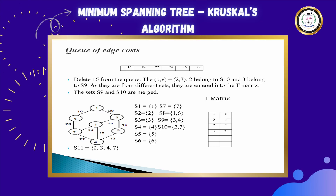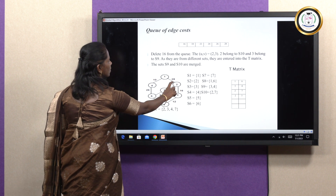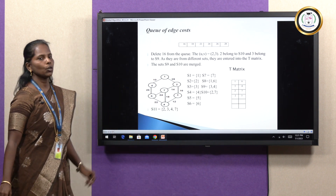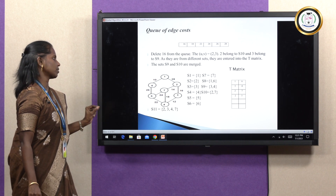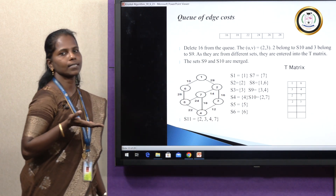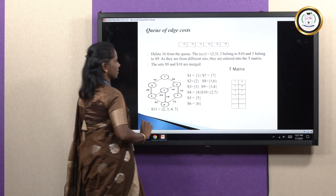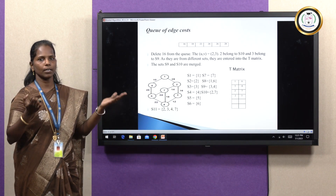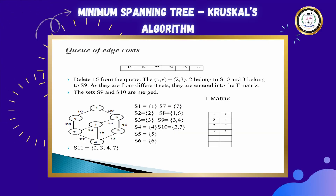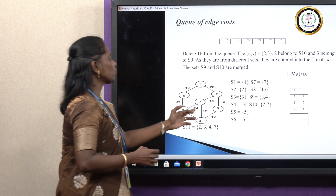The next value is 16. Find the nodes associated with 16 — they are 2 and 3. Check if 2 and 3 are in the same set or different sets. 2 is present in set S10 — always refer to the latest set. 3 is present in set S9. Since they are in different sets, place them in the T matrix. After placing, merge S10 and S9 to create a new set S11 with values 2, 3, 4, 7.